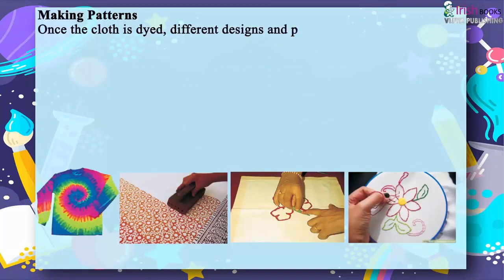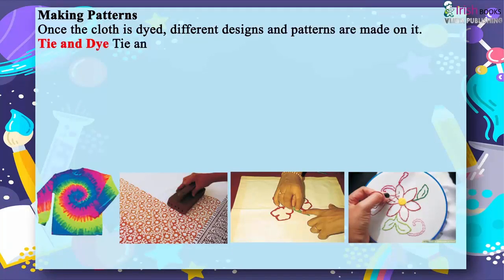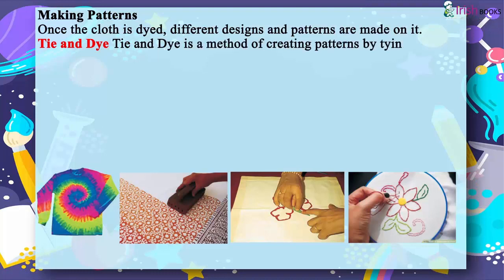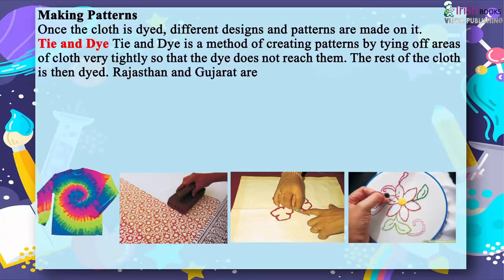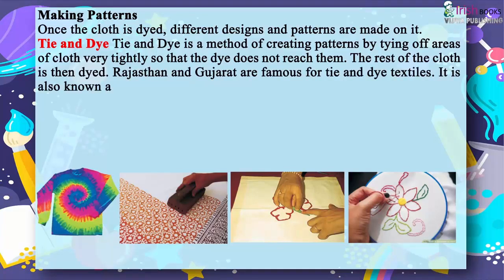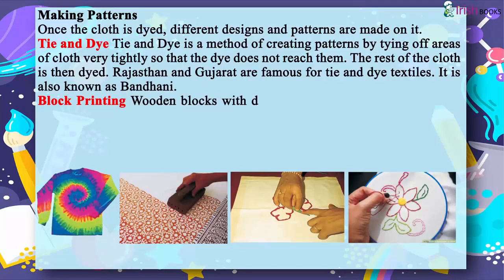Once the cloth is dyed, different designs and patterns are made on it. Tie and dye is a method of creating patterns by tying off areas of cloth very tightly so that the dye does not reach them. The rest of the cloth is then dyed. Rajasthan and Gujarat are famous for tie and dye textiles. It is also known as bandhani.